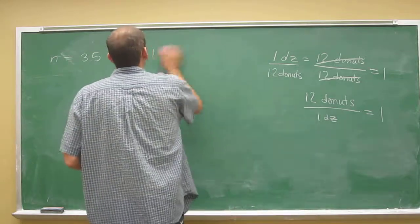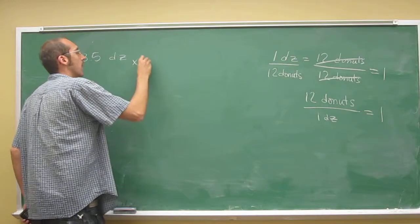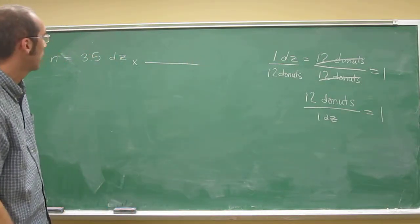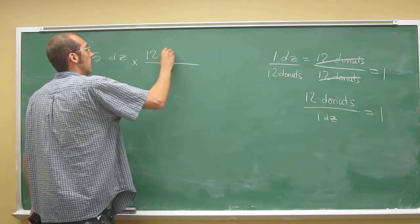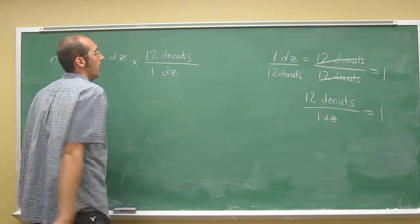Okay, so let's do that, and this is what you do in your head when you figure out if the guy at the doughnut store gave you the right amount or not. So, just put 12 doughnuts on top and 1 dozen on the bottom.